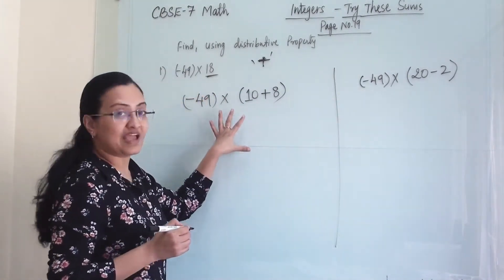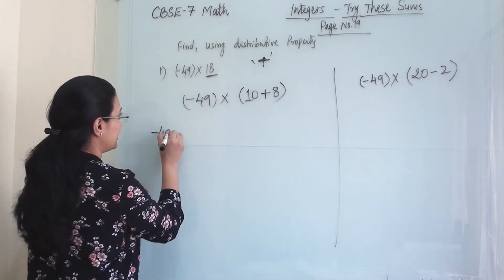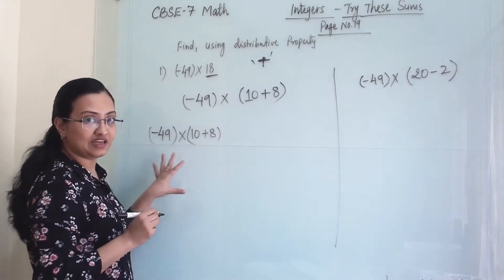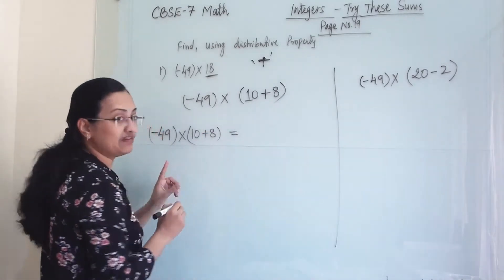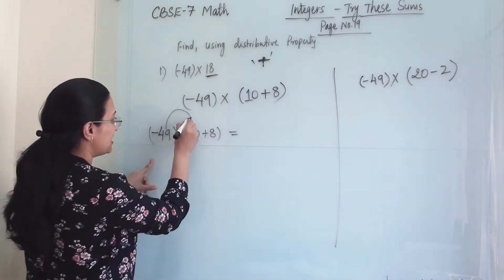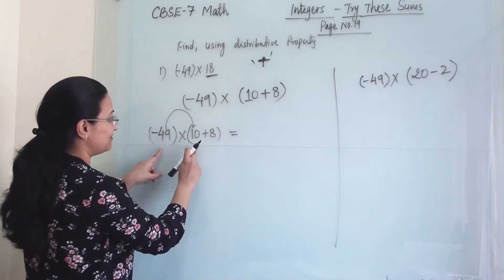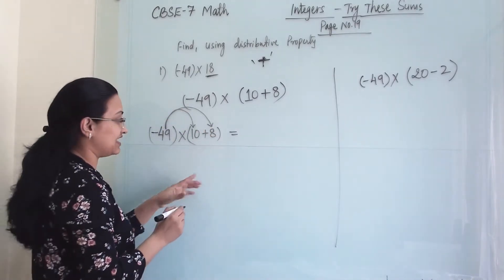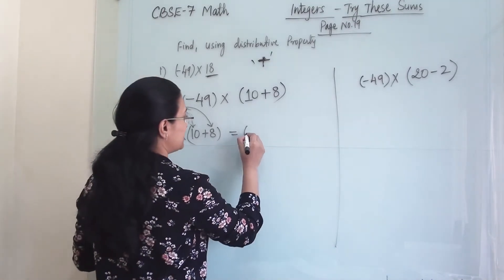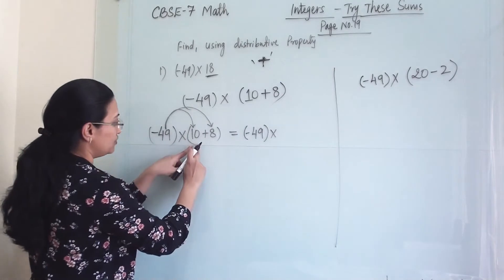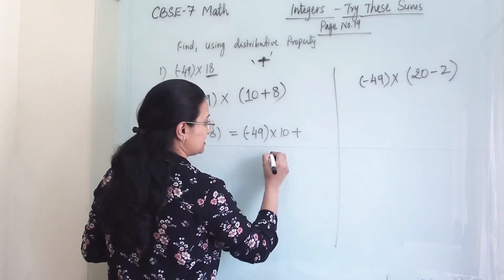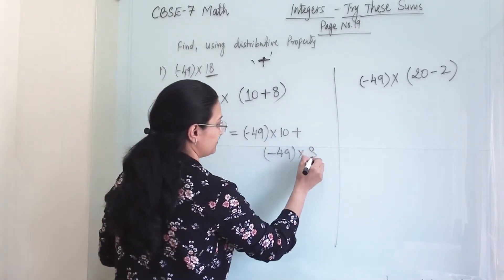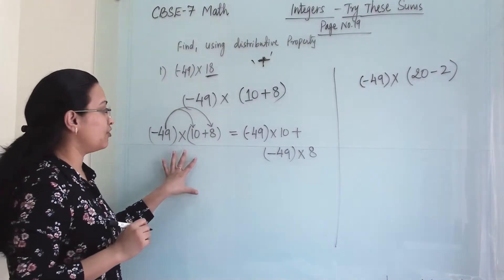First I will expand these numbers: minus 49 into (10 plus 8) will be my left hand side. Now, for my right hand side, I will expand this — first I will multiply minus 49 with 10, then plus, and then minus 49 multiplied with 8. That will be my expanded form: minus 49 into 10, plus minus 49 into 8.